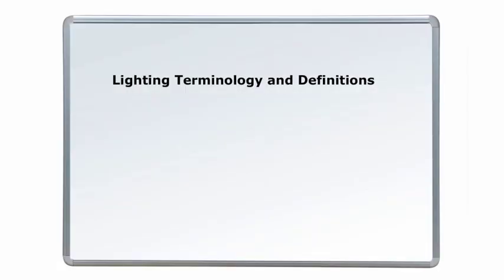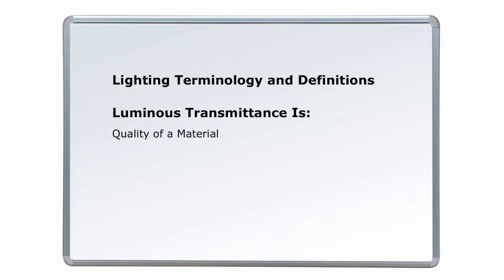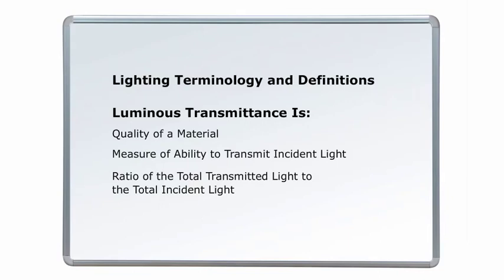Lighting terminology and definitions. Luminous transmittance, which is also called transmittance, transmission factor, and coefficient of transmission, is a quality of a material such as a luminaire lens or diffuser and is a measure of its ability to transmit incident light. It is the ratio of the total transmitted light to the total incident light.